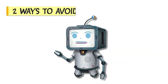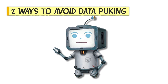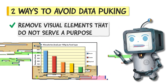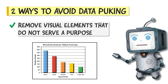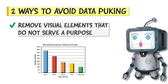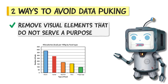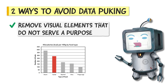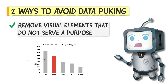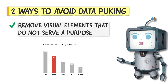There are two main ways to avoid data puking when making content. The first is to remove as many unnecessary elements as possible. Go check out the video I've made on this topic for more details, but the main principle is to work out what the objective of your visual is. And if bits of your data viz aren't helping you achieve this objective, just remove them.